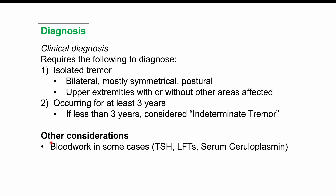Blood work may be considered when there are other associated signs and symptoms, or if there is no family history. TSH — thyroid stimulating hormone — can be checked to rule out hyperthyroidism, which can cause tremors. Liver function tests can assess for liver disease, serum ceruloplasmin can be checked — low levels indicate Wilson's disease, which can also cause tremors — and creatinine can be checked to assess kidney functioning.